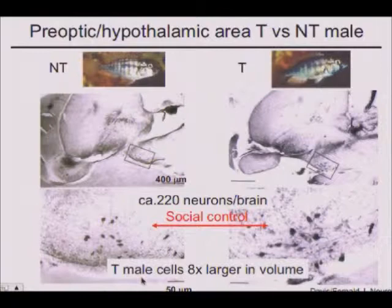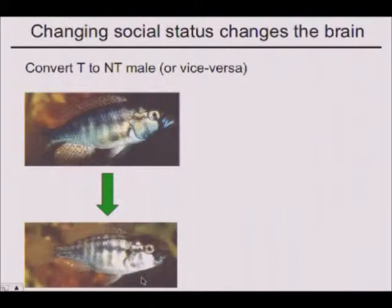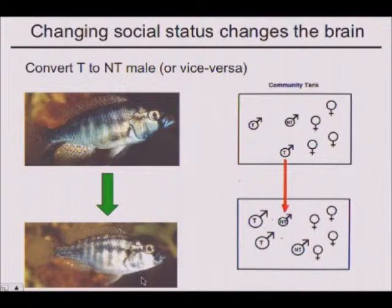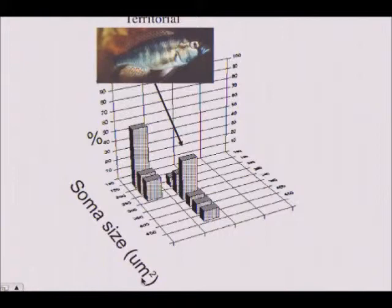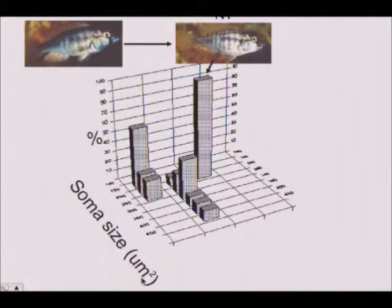We developed a technique where we can convert them from territorial to non-territorial by putting them into a tank where animals are about 10% bigger in size than they are — they'll immediately turn off their colors and be down-regulated to a prior status. If they're non-territorial, this is now soma size, which is a proxy for GnRH — the major regulatory peptide that controls reproductive competence in all of us. The GnRH that they have will work in you, and yours will work in them. So the NT males have small cells, the T males have large cells, but if you make a T male become NT, his cells will shrink, and if you let him become a dominant male again, those cells will grow.